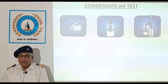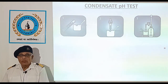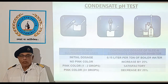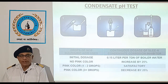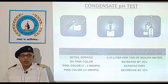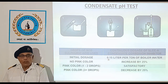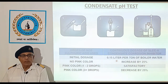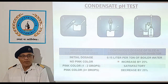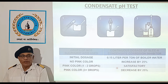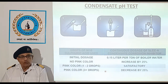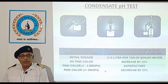Add sulfuric acid N/10 drop by drop until the pink color disappears. Record the result and adjust dosage as necessary. Initial dosage of condensate corrosion inhibitor is 0.15 litre per ton of feed water. If there is no pH test available, we need to increase the dosage by 25%. If we are able to neutralize with 1 or 2 drops, it is a satisfactory range. In case 3 or more drops are used to neutralize, we need to reduce the dosage by 25%.